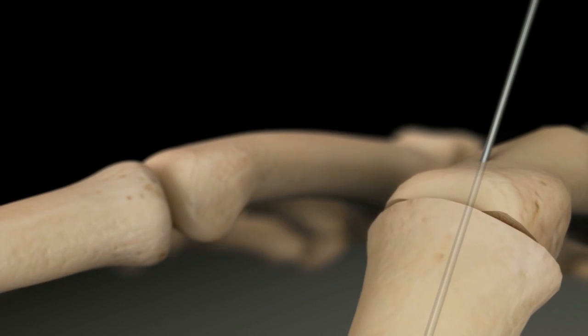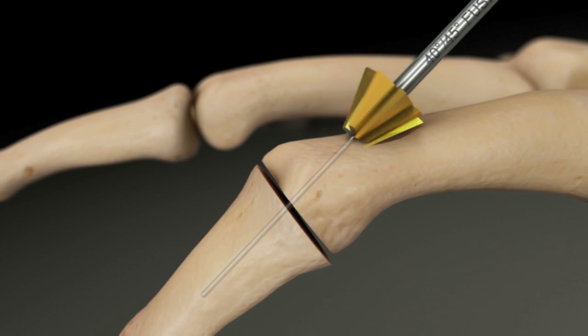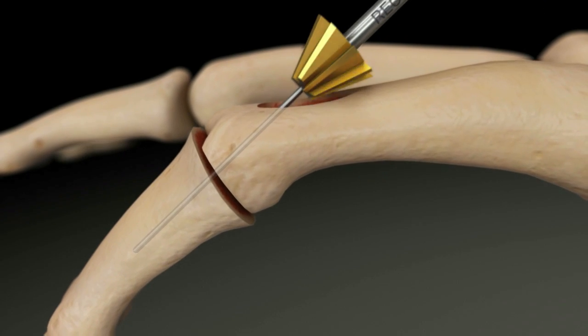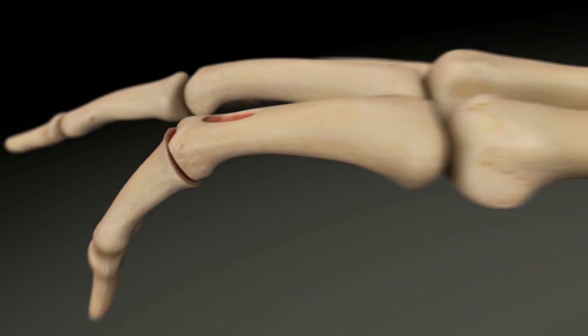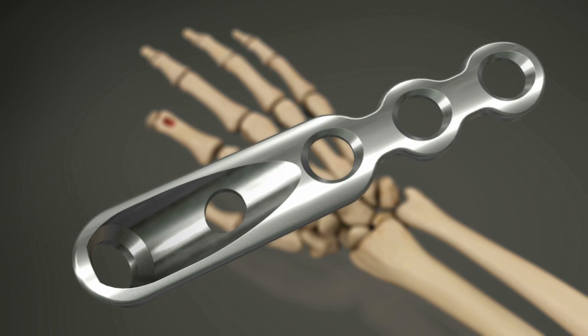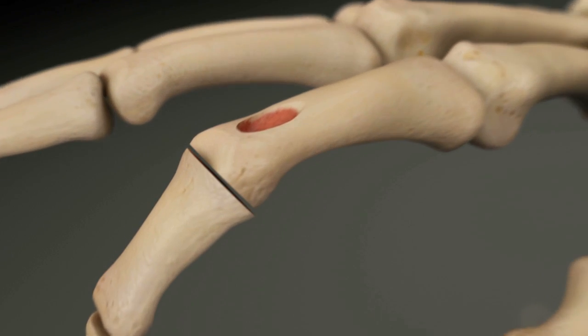With the reamer marked for your fusion angle, ream over the K-wire until the distal tip surface is cutting the bone. The low profile plate has rounded edges and is designed to sit in the recess of the bone created by the reamer.